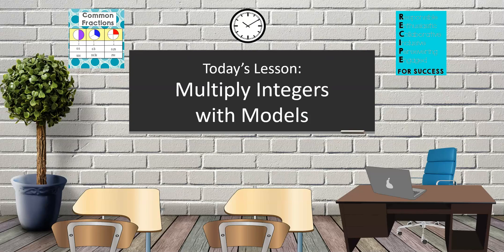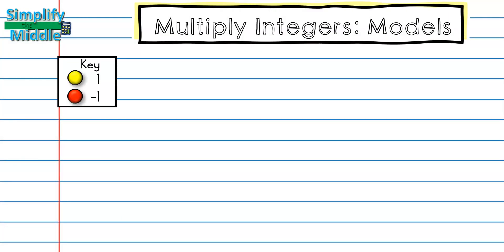Hi, and welcome to today's lesson, Multiply Integers with Models. We're going to be using two kinds of models again today. We will be using the counters, where yellow is going to represent positive 1, and red is representing negative 1.